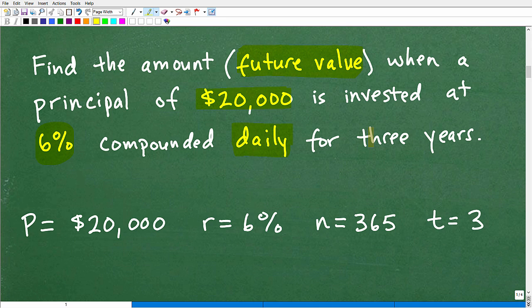Is invested at 6% compounded daily for three years. We are going to take this $20,000, invest it at 6% compounded daily for three years. How much money are we going to have after those three years? Our principal amount, pretty easy, that's $20,000.